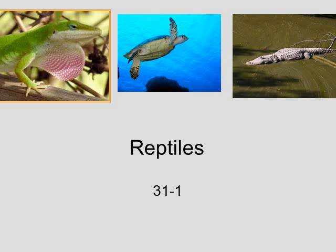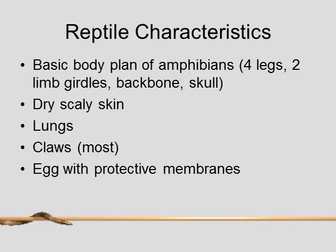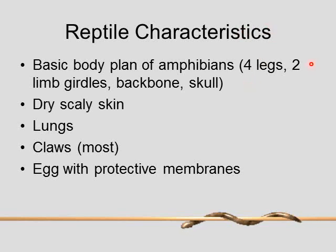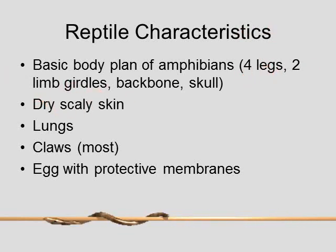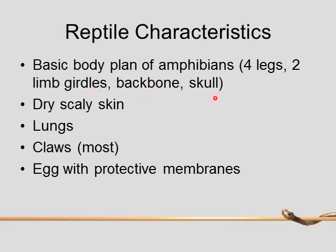Hey guys, Mr. Champlin here. Today we're going to be talking about reptiles. So what are the main characteristics of reptiles? Well, they are very similar to the amphibians in the sense that they have four legs, they have the two limb girdles — your pectoral girdle (shoulders) and your pelvic girdle (hips) — they also have a backbone and a skull.